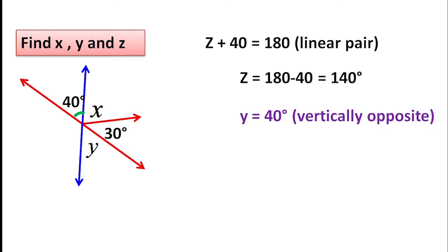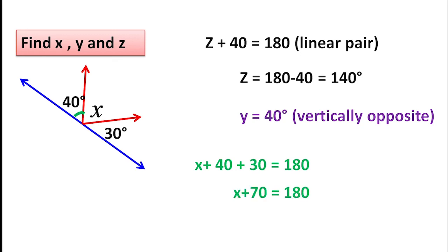Next, look at the figure again. We can see the blue colored line, and the angle in a straight line is 180 degrees. The sum of three angles equals 180 degrees: x plus 40 plus 30 equals 180 degrees, so x plus 70 equals 180 degrees, giving x equals 110 degrees.